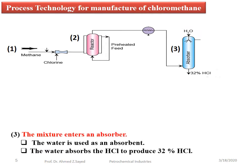Step 3: The mixture enters an absorber. Water is used as an absorbent. The water absorbs the HCl to produce 32% HCl.